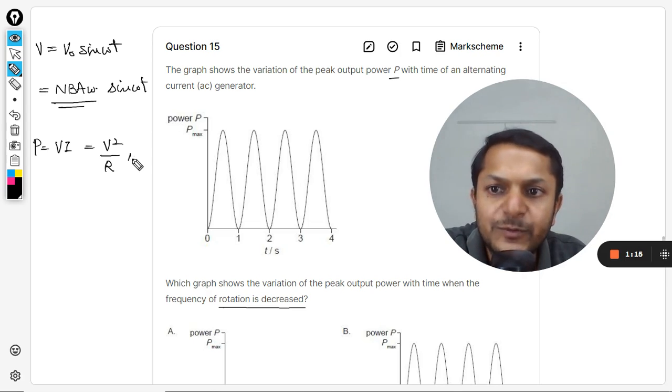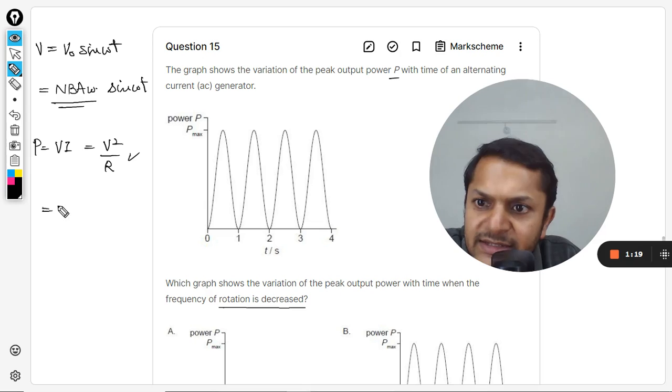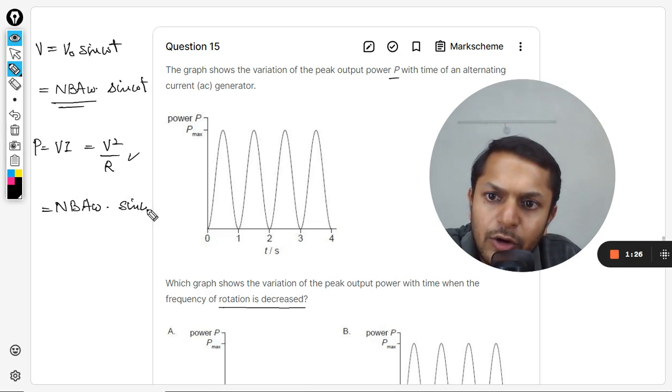So you would be getting the same formula. It's better we use V squared by R, so V squared by R means that it is going to be NBΑω sine omega t. So even this is squared, even the magnitude is squared.